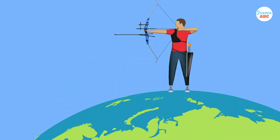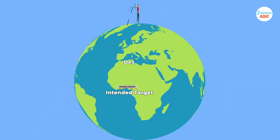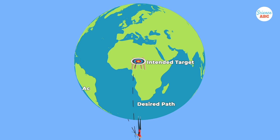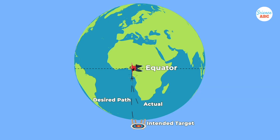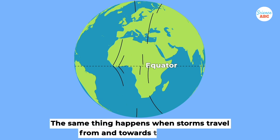Standing at Earth's north pole, if you were to shoot an arrow at a target in the southern direction towards the equator, the arrow would land west of the target, as the Earth rotates from west to east. However, if you shoot an arrow from the equator at a target towards the north pole, then the arrow would land east of the target. Similarly, in the southern hemisphere, the arrow shot from the south pole towards the equator would land west of the target, whereas the arrow shot towards the south pole would land east of the target. The same thing happens when winds, storms, and cyclones in the northern and southern hemispheres travel from and towards the equator.